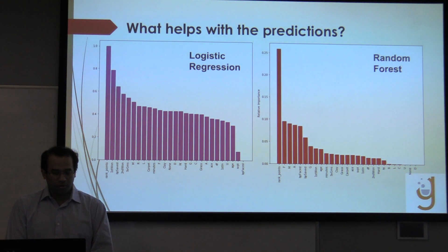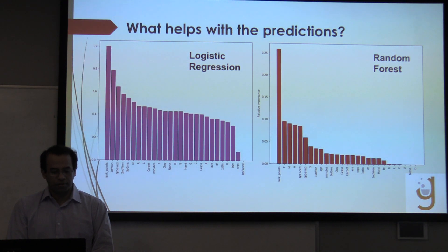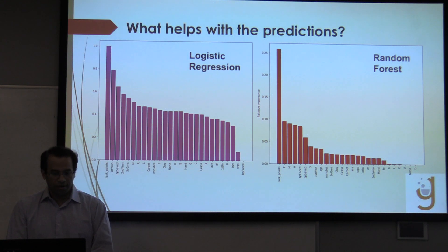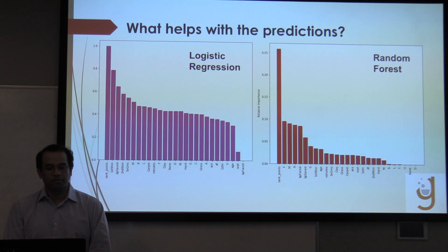Interestingly, one factor I thought would be more important — the surface of play — is relatively low in importance from both logistic regression and random forest.